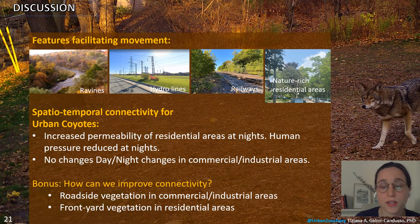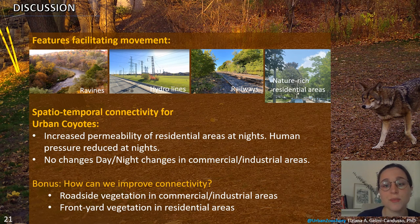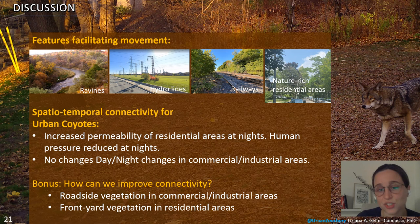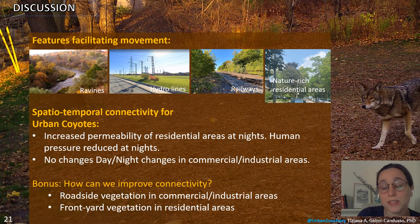To summarize, our analysis reveals that connectivity for coyotes in our study site in Toronto is dependent on ravines, hydrolines, railways, and nature-rich residential areas. In terms of spatial temporal changes, day versus night makes a big difference for residential areas. However, when there is a lack of vegetation, not even the release of human pressure increases connectivity — we see no changes during day and night for commercial and industrial areas. I have to note that we used residential population density; ideally we should be using location data from mobile devices, but this data is very expensive. Even so, vegetation makes a big difference despite the release of human pressure during the night.